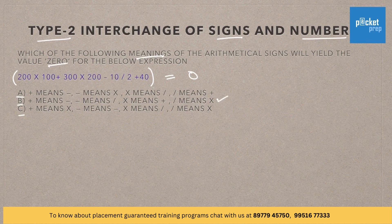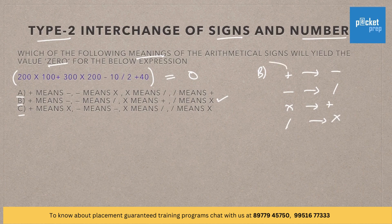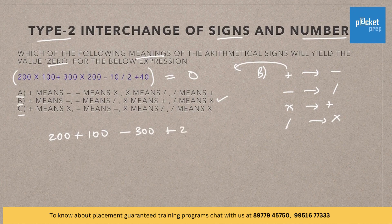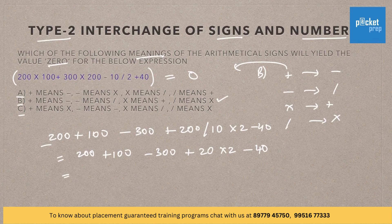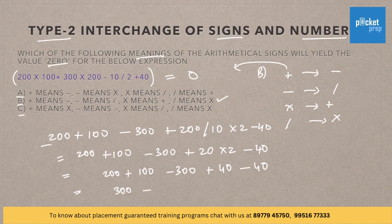Now let us try for option B. According to option B: plus means minus, minus means division, multiplication means plus, and division means multiplication. Let us substitute this in the given expression: 200 plus 100 minus 300 plus 200 divided by 10 into 2 minus 40. Now let us solve this according to BODMAS rule: 200 plus 100 minus 300 plus 20 into 2 minus 40. Further simplifying: 200 plus 100 minus 300 plus 40 minus 40, which gives 300 minus 300 plus 40 minus 40, equal to 0.